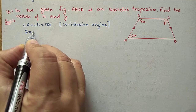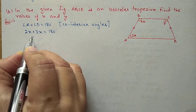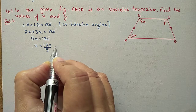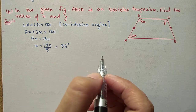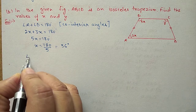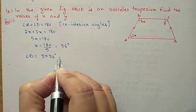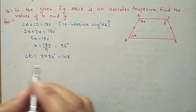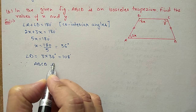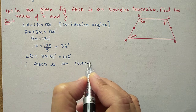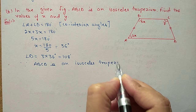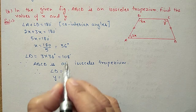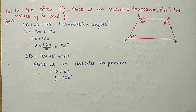A is 2X and D is 3X, equal to 180 degrees. So 5X is equal to 180 degrees, X value will be 180 divided by 5, equal to 36 degrees. Now angle D is equal to 3 times 36 degrees, equal to 108 degrees. Because it is an isosceles trapezium, angle C and angle D will be equal. Therefore angle C equals angle D, C is Y and D we just calculated as 108 degrees, so Y will be 108 degrees.